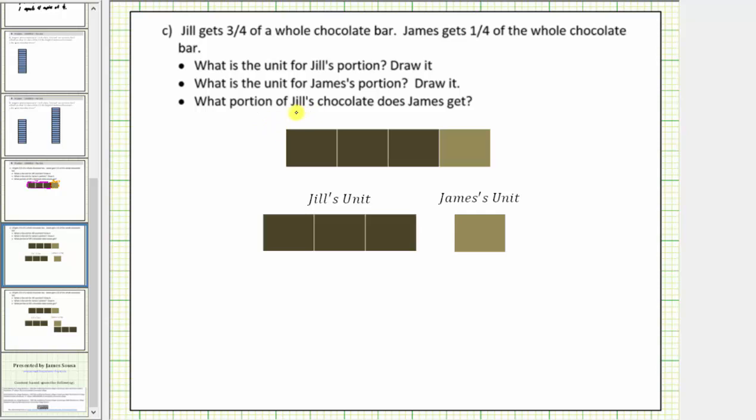So to answer the question, what portion of Jill's chocolate does James get, let's compare the two amounts next to each other, as we see here. Notice how it takes three copies of James's chocolate to make the amount of chocolate Jill gets, which means James receives one-third of the portion of chocolate that Jill gets.